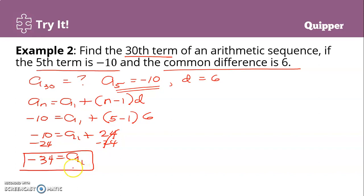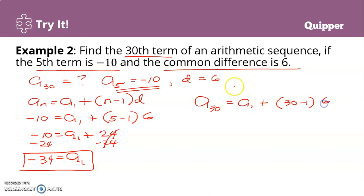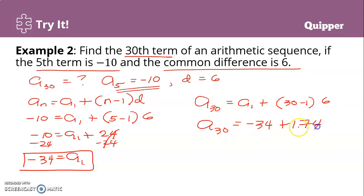Now that we have a sub 1, we can solve for a sub 30. Using the formula: a sub 30 equals negative 34 plus 30 minus 1 times 6. That is negative 34 plus 29 times 6, which is 174. So negative 34 plus 174 equals 140. Therefore, our 30th term is 140.